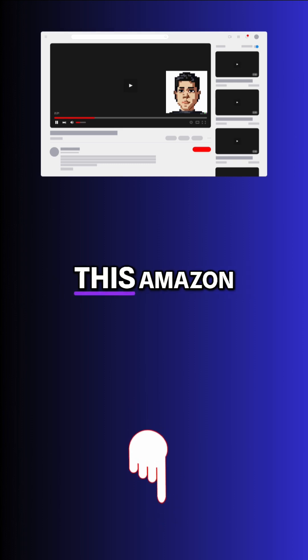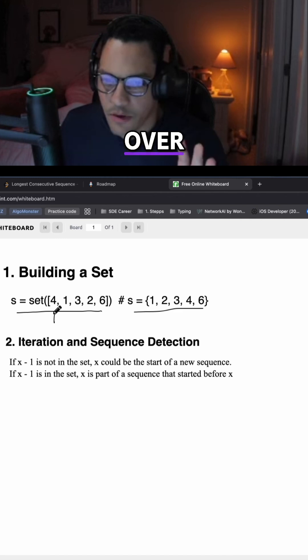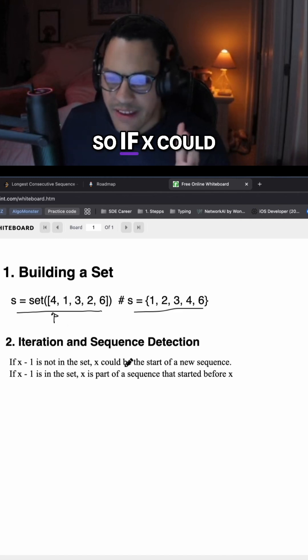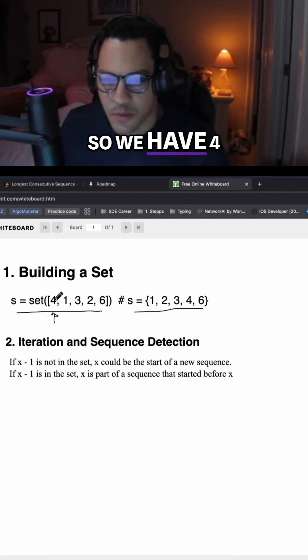Watch the full video to solve this Amazon question. The number we're iterating over, as I mentioned, if x could be the start of a new sequence - so we have x equals 4 in this case.